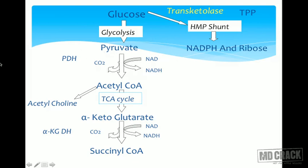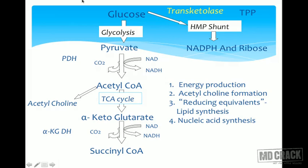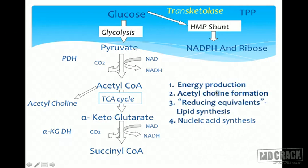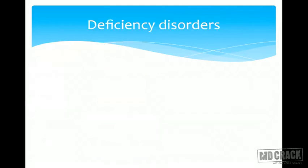Acetyl-CoA is required for acetylcholine synthesis. If TPP is blocked, pyruvate accumulates and energy production decreases. TPP is also involved in NADPH production for lipid synthesis and ribose-5-phosphate for nucleic acid synthesis. These are the overall functions of thiamine pyrophosphate.